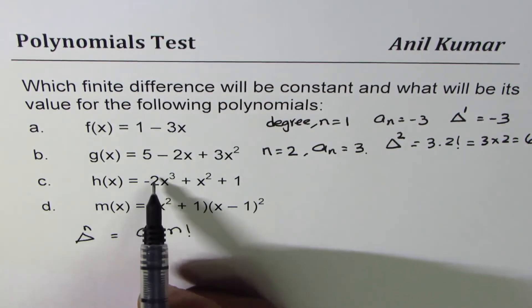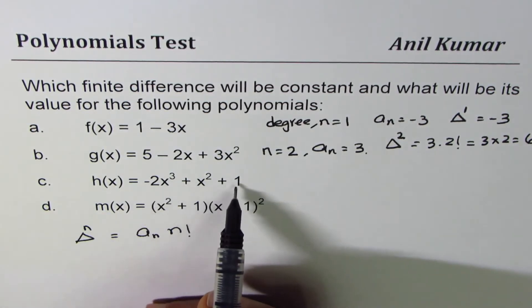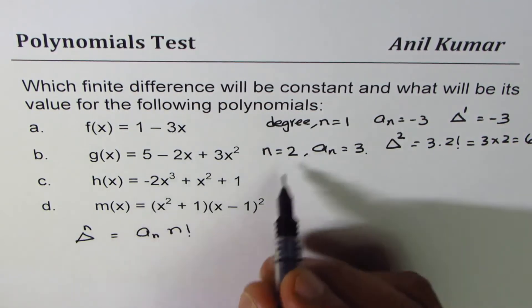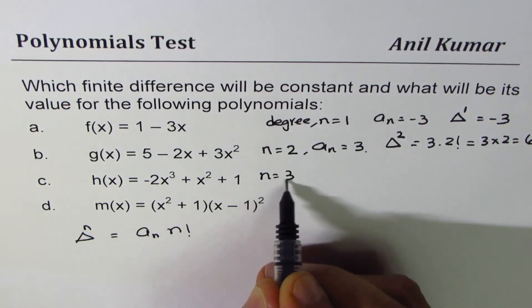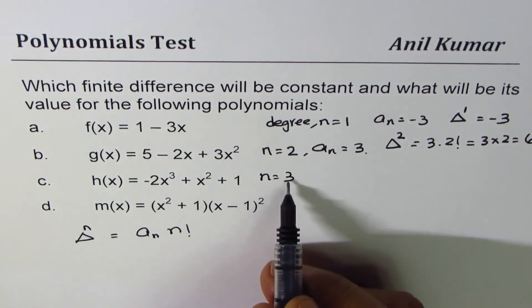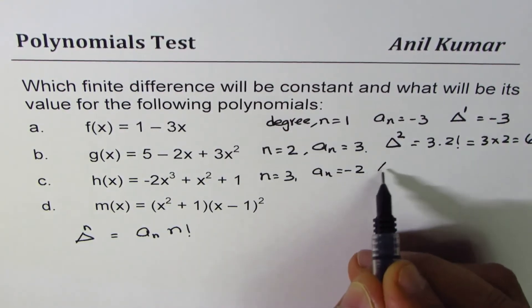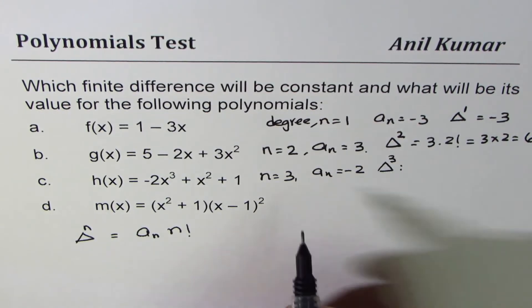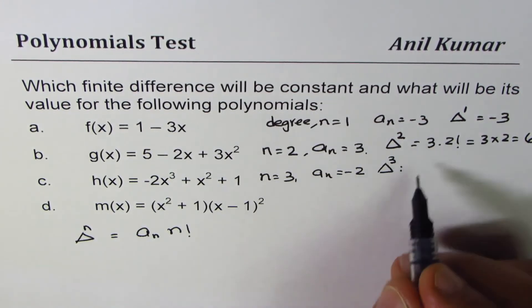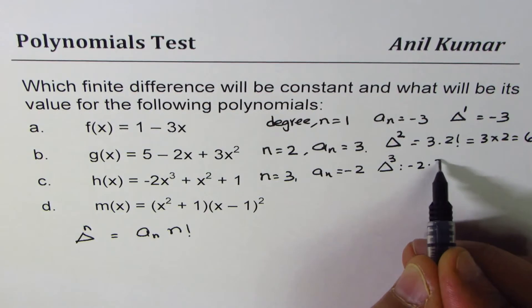The next function here is minus 2x cubed plus x squared plus 1. Degree is 3. So the third finite difference will be constant. Leading coefficient is minus 2.